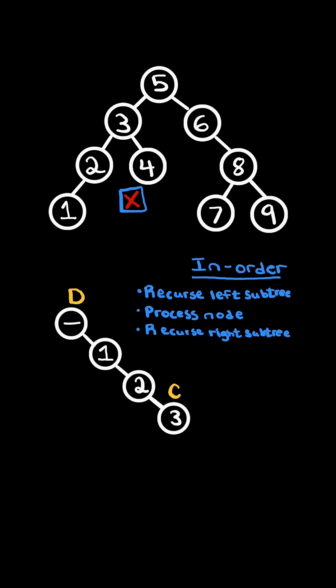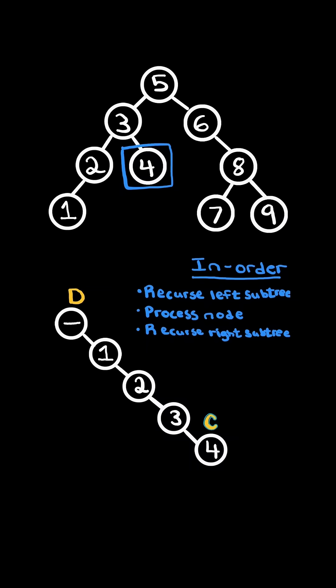We recurse on its left subtree, but it's null. So we process the node, we set current dot right equaling the node, and finally we set current equaling the node. And we continue the traversal and recurse on its right subtree, but it's null. So we move up the stack and process the node.